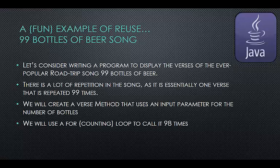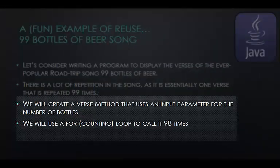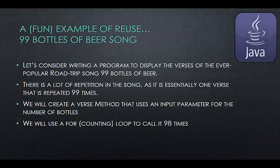Let's take a look at a fun example problem that begs for reuse, instead of repeating lines of code. The 99 Bottles of Beer song. We'll consider the writing of a program to display the verses of the ever-popular road trip song, 99 Bottles of Beer. I promise I won't sing it. There is a lot of repetition in the song, as it is essentially one verse that is repeated 99 times. We will create a verse method that uses an input parameter for the number of bottles. We will use a for counting loop to call it 98 times.